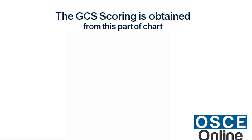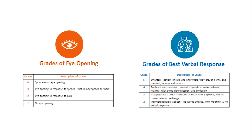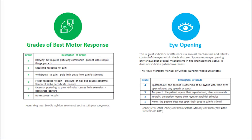The GCS scoring is obtained from the chart. Note that patients must be able to follow commands such as 'stick your tongue out.' Eye Opening is a great indicator of differences in arousal mechanism and reflects control of the eyes within the brainstem. Spontaneous eye opening only shows that arousal mechanisms in the brainstem are active, as stated in the Royal Marsden Manual of Clinical Nursing Procedures.